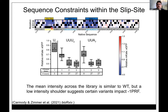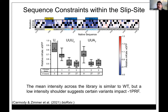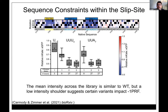Whether you mutate the UUU or UUA of the slippery sequence, it's essential. Downstream you see two regions with a blue footprint corresponding to the two halves of the experimentally characterized stem-loop. Groups like the Atkins group have explored this with frameshifting assays and SHAPE mapping of RNA structure. RNA structure predictions show more than one potential stem that can form.